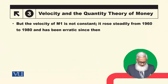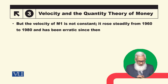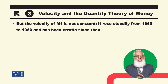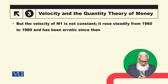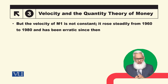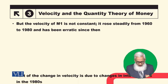Empirically, what is the situation? American history tells us that M1 velocity is not constant. While the Quantity Theory of Money assumes velocity is constant, empirically M1 velocity is not constant — it rose steadily from 1960 to 1980 and has been erratic and unpredictable since then.